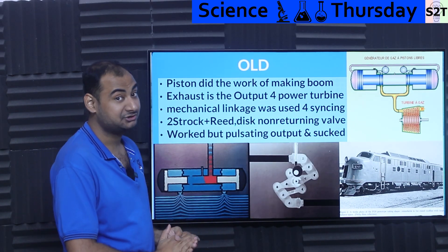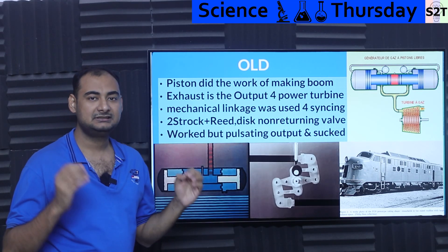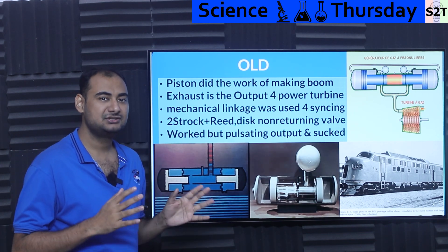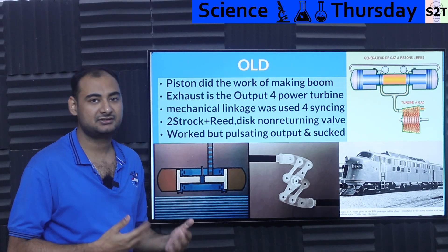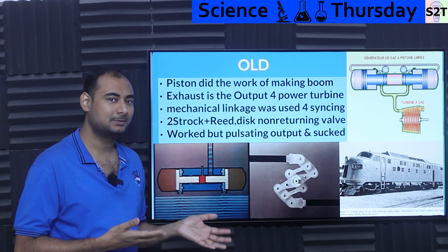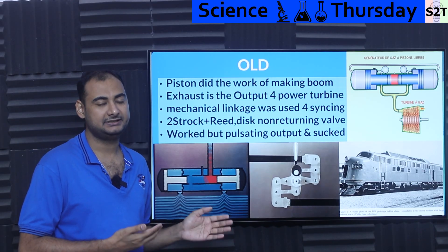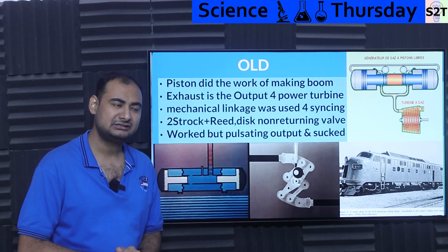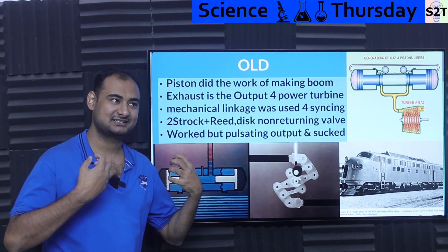The oldest design that actually worked was this sort of system. Basically, the piston did the job of compression and combustion — and this was in the 1950s when jet engines were very new. While the idea was amazing, the metallurgy was not there. Steel blades couldn't handle high temperatures; they were barely reaching 700°C, whereas now we have super alloys handling upwards of 1300°C.